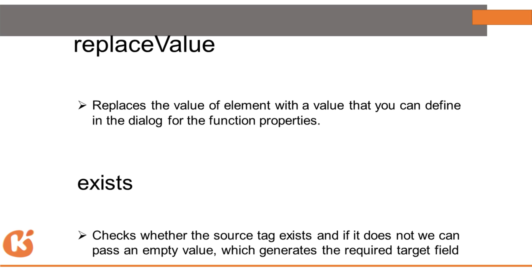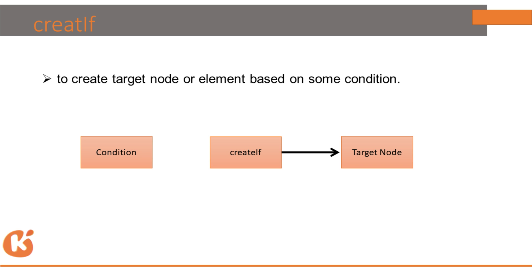Exist returns a boolean true or false — it is used in node function to check whether a node is available. If the node is available it returns true, otherwise false. If Then (creative) also works in node function: if the condition is satisfied it returns true; if not, it suppresses the value and does not pass any output.